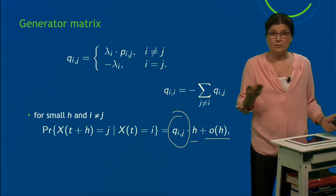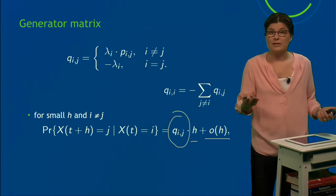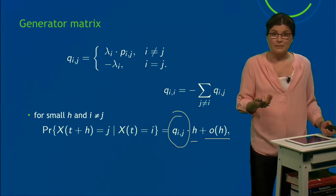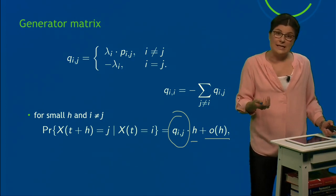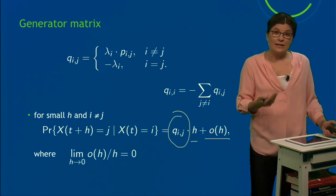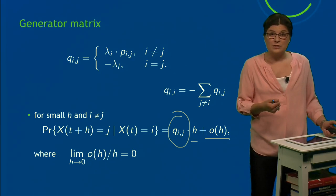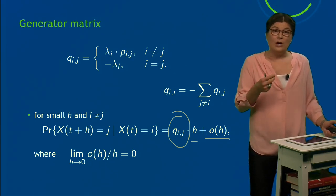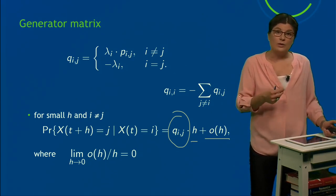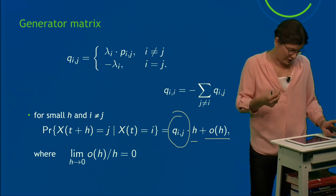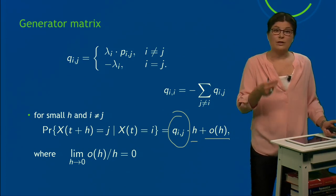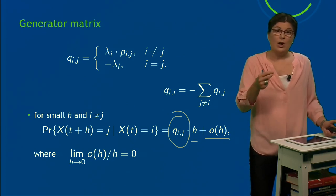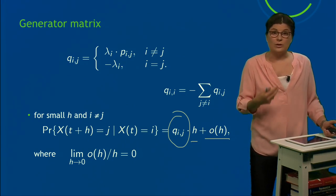And now here comes the problem—well, the challenge with real time. You don't have these time steps that make computations in DTMC so easy. So here you have to add o(h), and o(h) is the probability to move from i to j in more than one step. Yeah, that's the problem in real time—you don't know how many steps you'll do in a certain time. But the good news is, if I take this h very small, then o(h) will go to zero. So if I take the limit of h to zero, o(h)/h will go to zero.